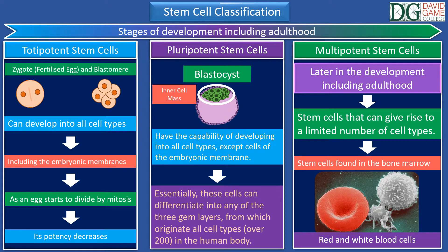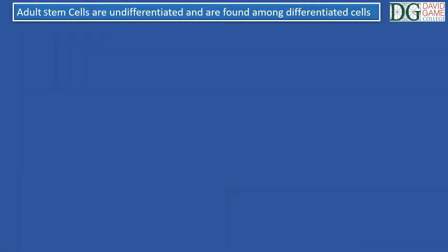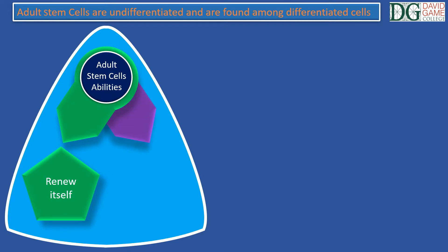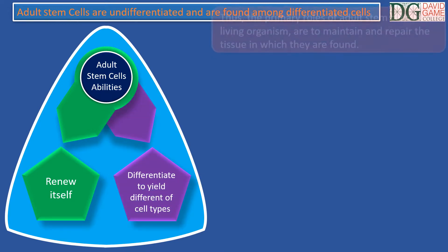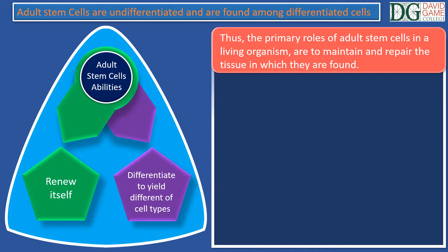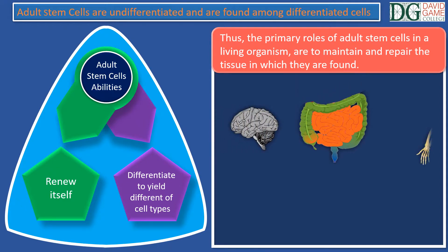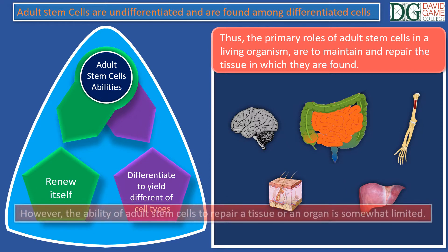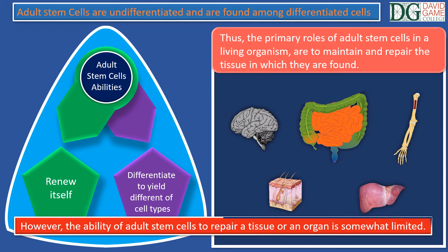Adult stem cells are present in different tissues and organs. Adult stem cells are undifferentiated, as they are found among differentiated cells in a tissue or organ. An adult stem cell can renew itself and also can differentiate to yield some or all the major specialized cell types of a tissue or organ. Thus, the primary roles of adult stem cells in a living organism are to maintain and repair the tissue in which they are found, such as the brain, the intestine, the bone marrow, the skin, and the liver, as well as many other tissues. However, the ability of adult stem cells to repair tissue or organ is somewhat limited.